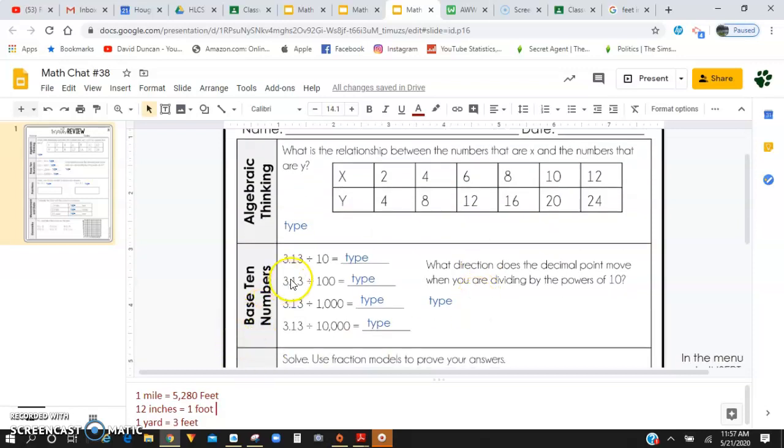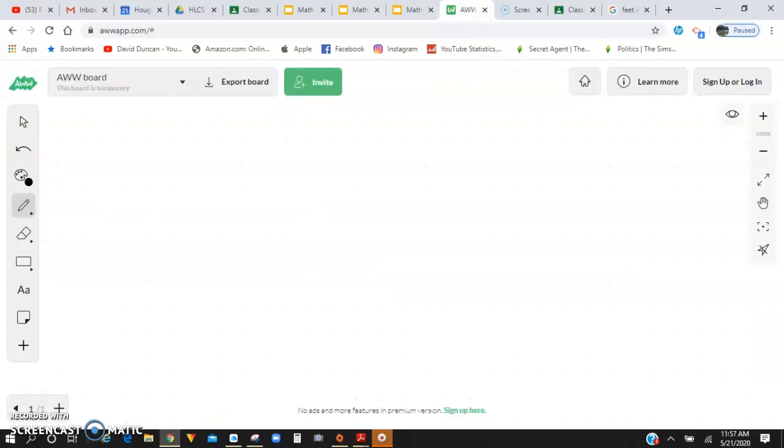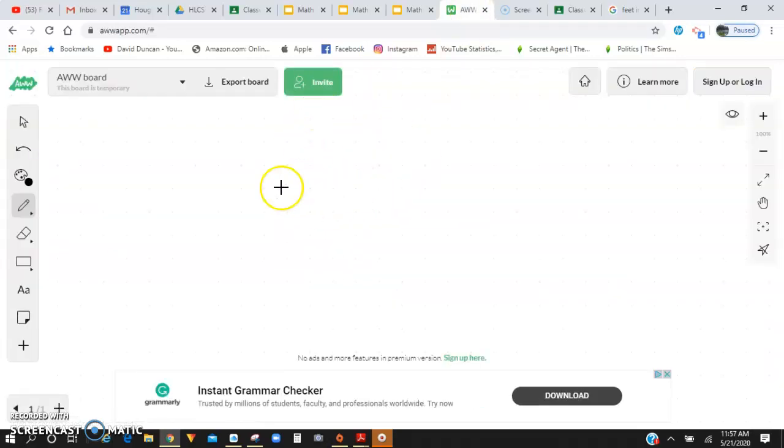Down here for base 10 numbers, you are going to be dividing by powers of 10. So remember, when you're dividing, you are moving the decimal to the left. You are making that number smaller. You guys can use that app right here to start working on that.